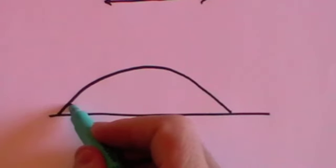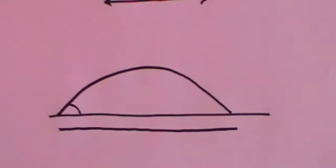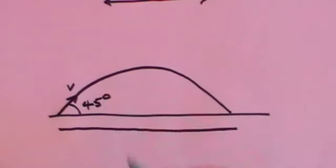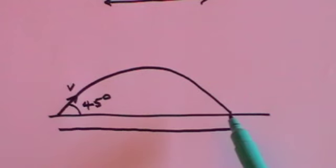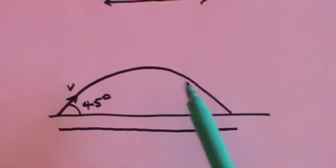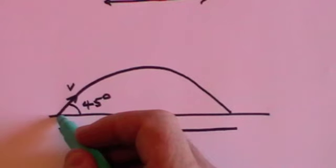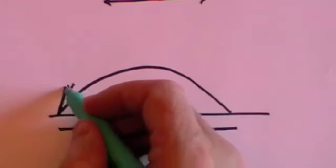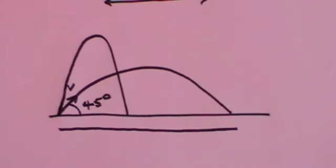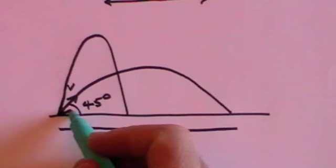If we take the case of projectile motion where we throw the ball at an angle, then the maximum range — that is, the furthest that it travels — will arise at an angle of 45 degrees for any given velocity. The faster you throw it, the further it will go. But if you throw it at a constant velocity, let's say 20 metres per second, you need to throw it at an angle of 45 degrees to get the maximum range. If you throw it at a larger angle it will go higher but not so far; at a smaller angle it will come back to Earth much more quickly. The maximum range is when the angle is 45 degrees.